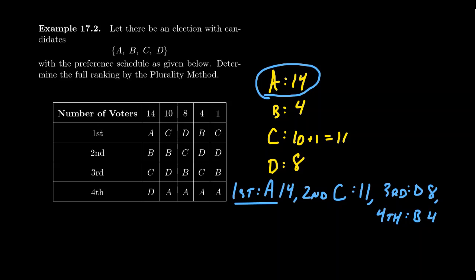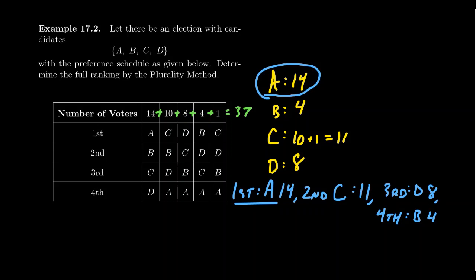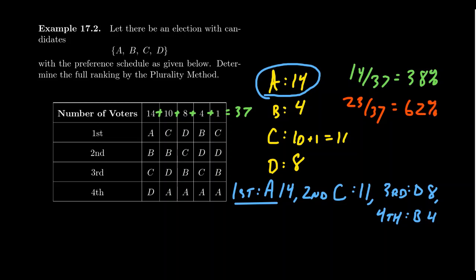There's something worth noting in this election. If you take the total number of votes — 14 plus 10 plus 8 plus 4 plus 1 — that adds up to 37. There were 37 people who participated. 14 divided by 37 gives you 38%. So candidate A wins this plurality vote, but they only had 38% of the voters' support. Conversely, if 14 people put A as their first place vote, that means 23 people put A as not their first place vote — that gives you 62%. So a majority of the people did not place A as their first place vote, yet A is the winner of this election.